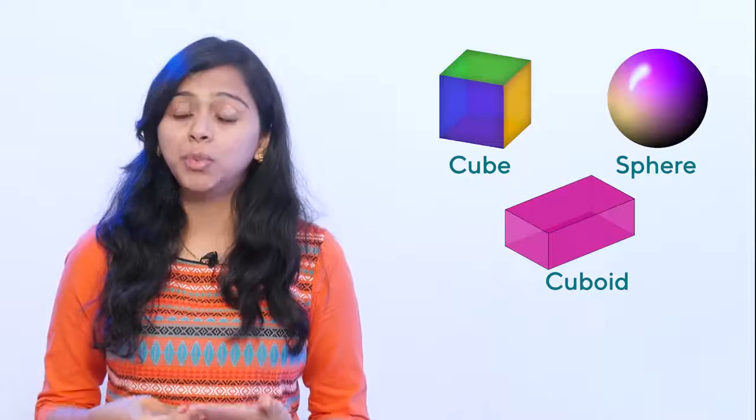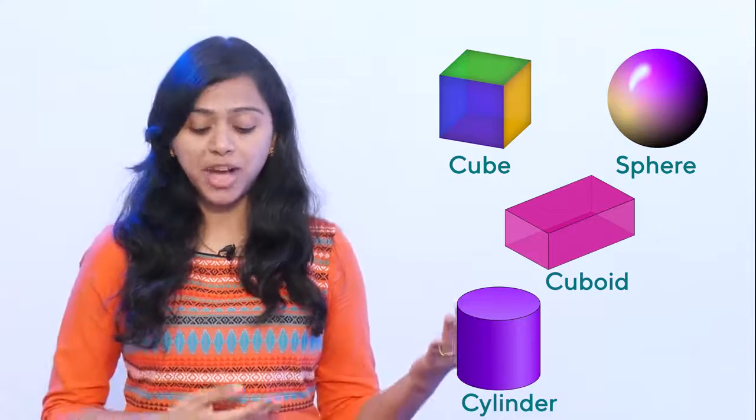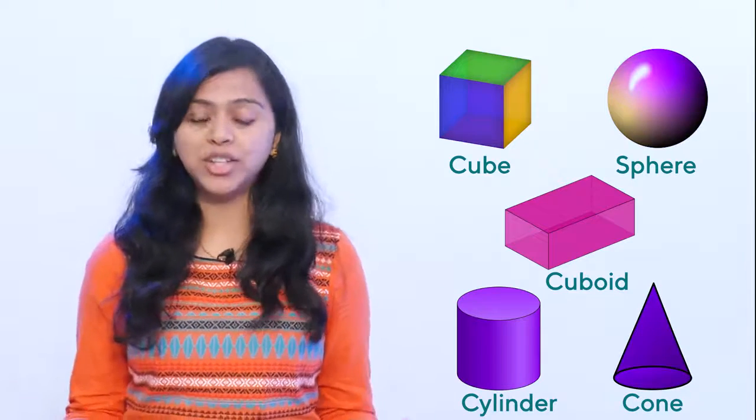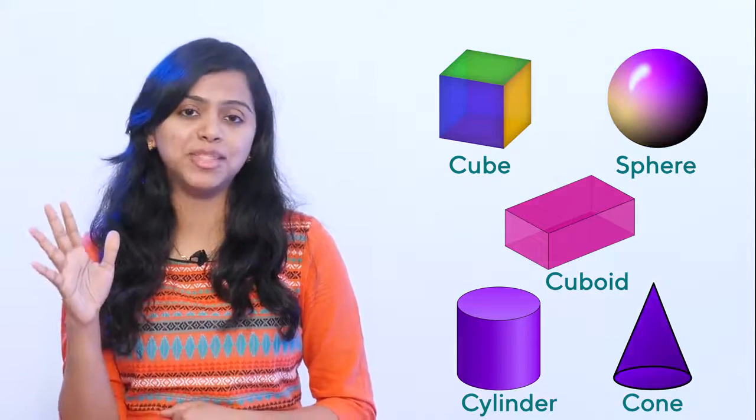Now you can solve the activity on the same page. You can colour and learn more about these shapes. Next, we are going to learn about solid shapes. The solid shapes are: cube, sphere, cuboid, cylinder, and cone. So these are the five solid shapes. I'm going to show you a few things, and you have to guess whether they are a cube, a cuboid, or a cone.